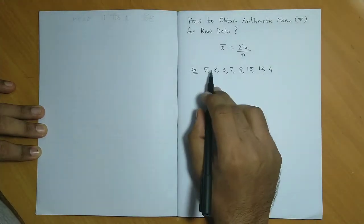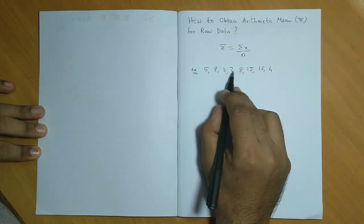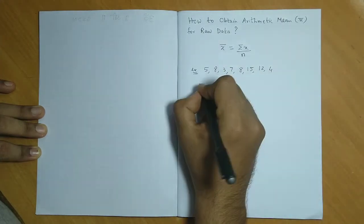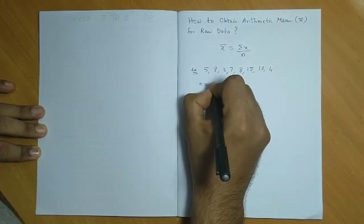Let us count the number of observations. So 1, 2, 3, 4, 5, 6, 7, 8. So number of observations here is 8.